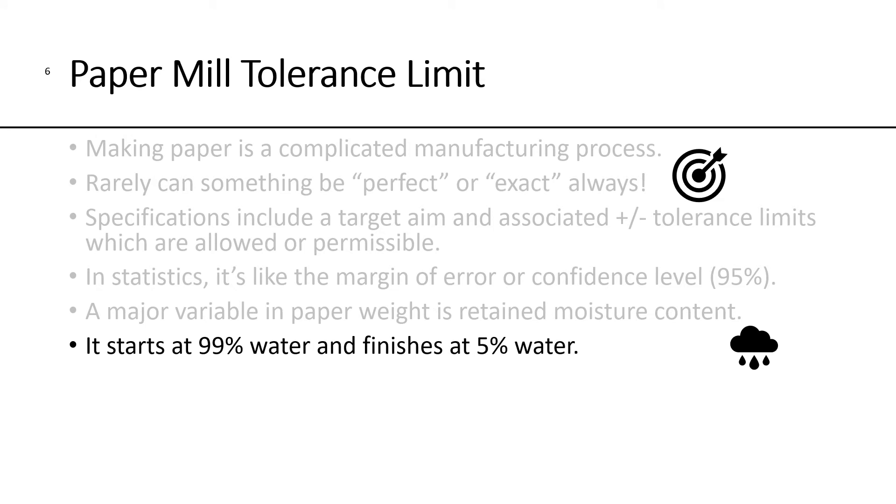A major variable in paper manufacturing in terms of the weight is the retained moisture content. Paper starts out at the head box on the Fourdrinier paper making machine as 99% water, just 1% cellulose fiber. And then when we get towards the finishing end, where the paper has already been dried, it now just has a 5% moisture content, which means it's 95% cellulose fiber.